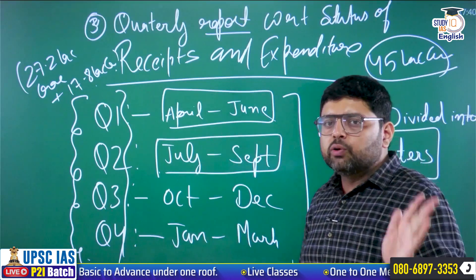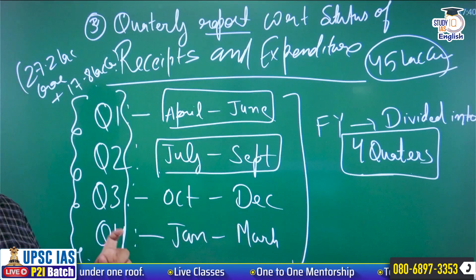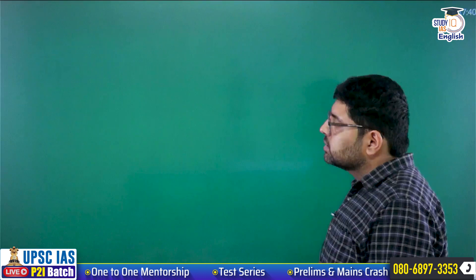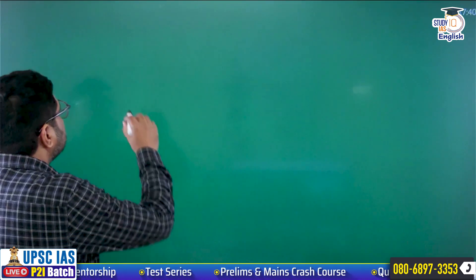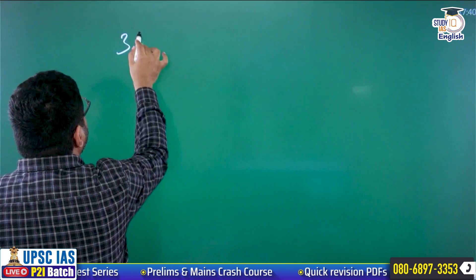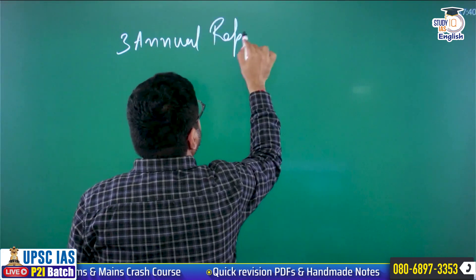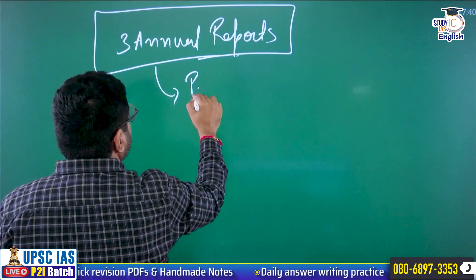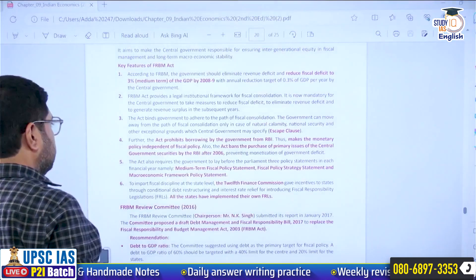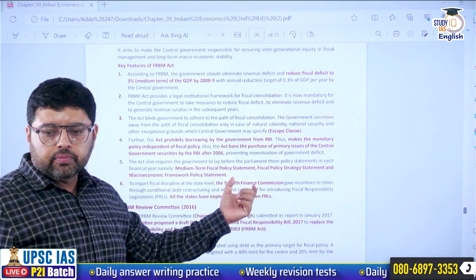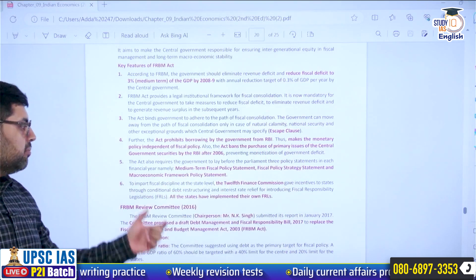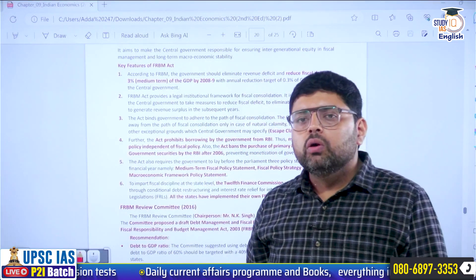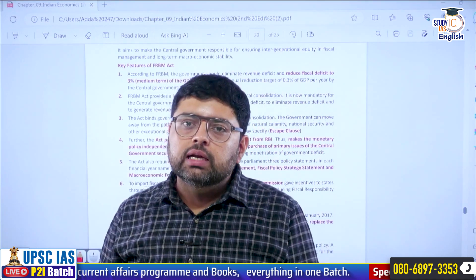The FRBM Act provides a legal and institutional framework for fiscal consolidation. Fiscal consolidation means steps have been taken to reduce your deficit, or in other words, to reduce borrowing, since FD equals total borrowing. It is mandatory for the central government to reduce fiscal deficit, eliminate revenue deficit, and generate revenue surplus in subsequent years. The government can move away from the path of fiscal consolidation only in emergency situations like natural calamity, national security, or other exceptional grounds.